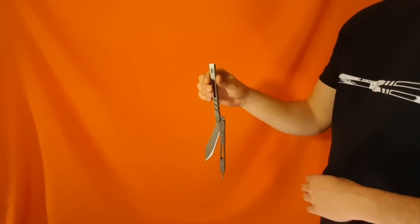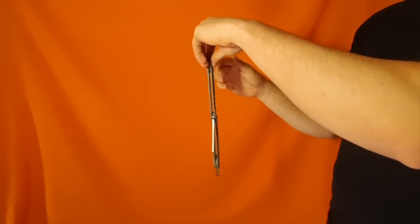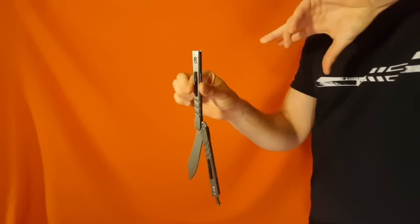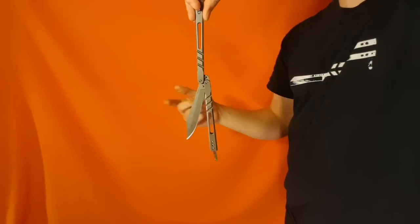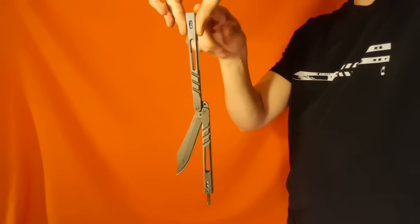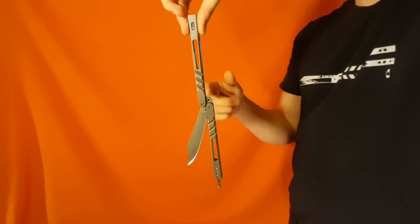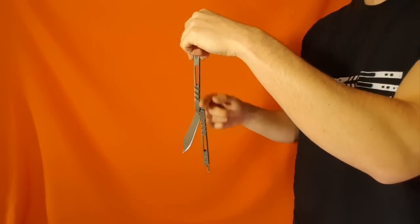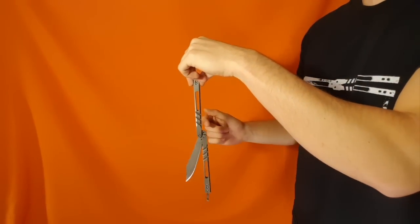Next what you're gonna do is you are going to take the knife in this position here. So we're kind of going in a different direction. And you're gonna hang on to the safe handle with just your thumb and middle finger, doesn't really matter, with the bite handle hanging down and the blade pointing away from you.